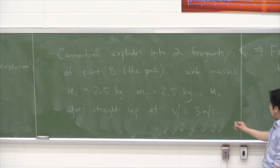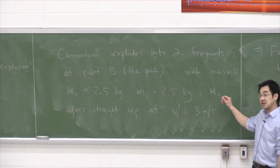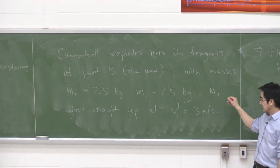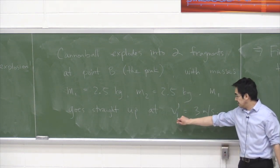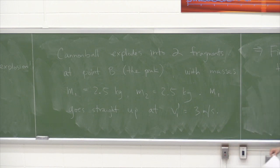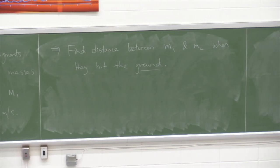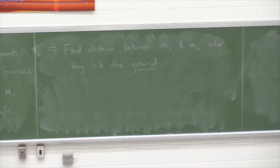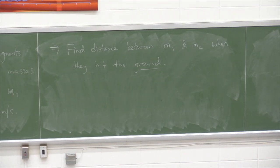You're told that mass 1 goes straight up with a velocity v1-prime of 3 meters per second after the explosion. The question asks: when these two masses eventually come back down and hit the ground, how far apart are they? Essentially, if you're searching for the fragments, how far do you need to go to find the second fragment after finding the first?